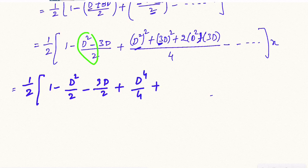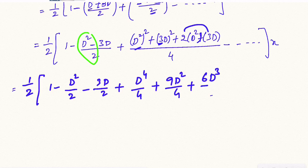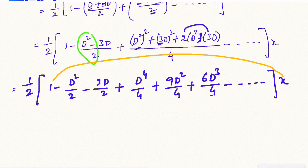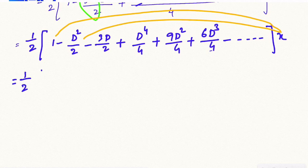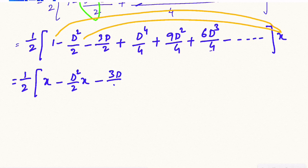Continuing the expansion: we get terms with 9D²/4, plus cross terms 6D³/4, and so on. Now multiplying through by x: (1/2) times [1·x minus (D²/2)·x minus (3D/2)·x plus (D⁴/4)·x + ...].